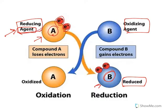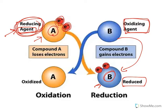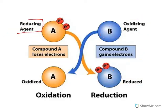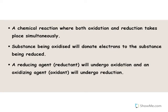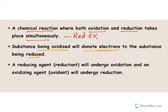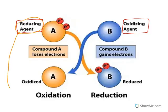Two more important terms are reducing agent and oxidizing agent. A reducing agent causes reduction by donating electrons. Here, A donates electrons to B — B gains electrons and gets reduced, so A is the reducing agent. B is the oxidizing agent because it removes electrons from A, causing A to get oxidized. A reducing agent causes reduction; an oxidizing agent causes oxidation. A reaction where both oxidation and reduction occur simultaneously is known as a redox reaction.